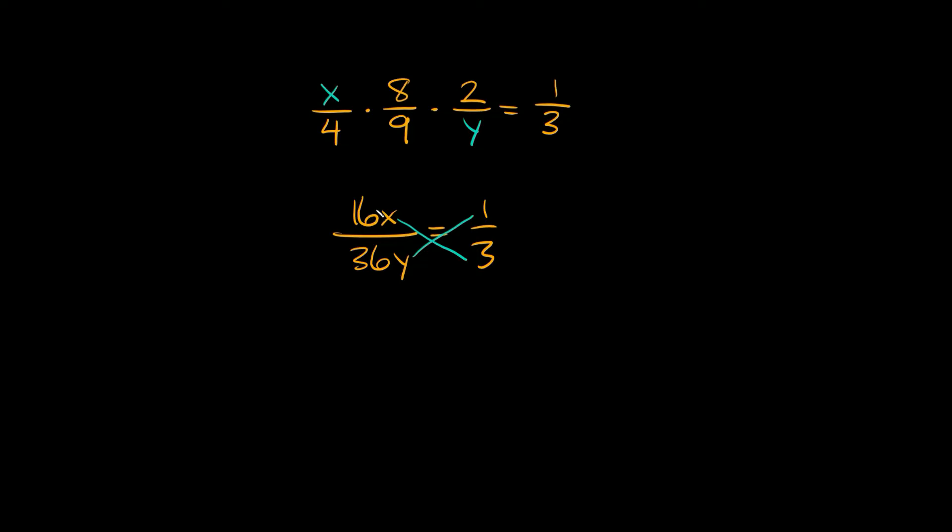So the first cross we're going to multiply together is 16x times 3, which is equal to 48x and then we're going to set that equal to our other cross, 36y times 1, which is equal to just 36y.